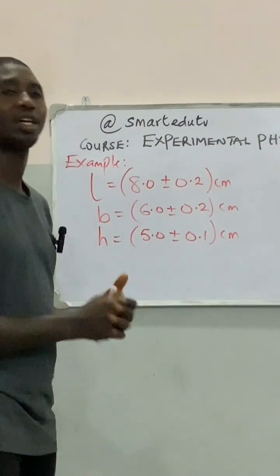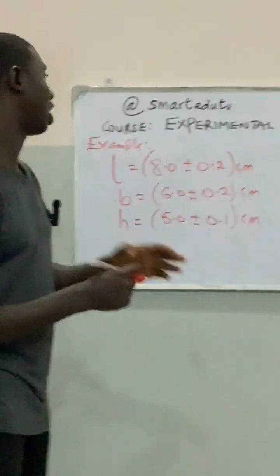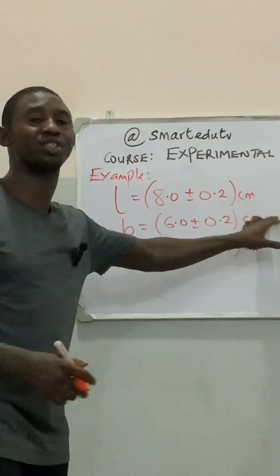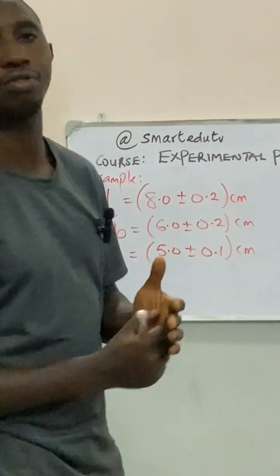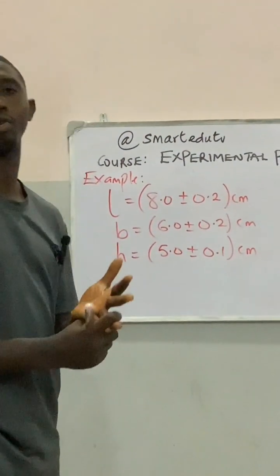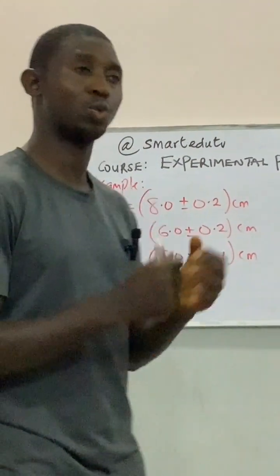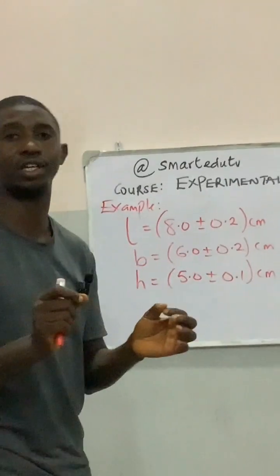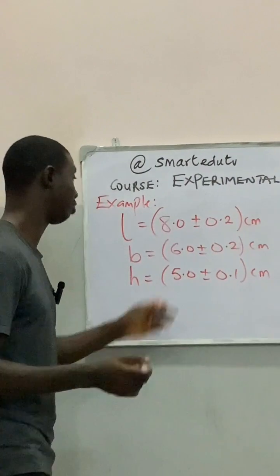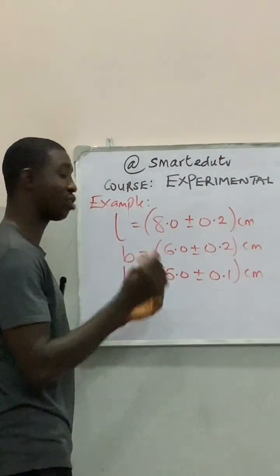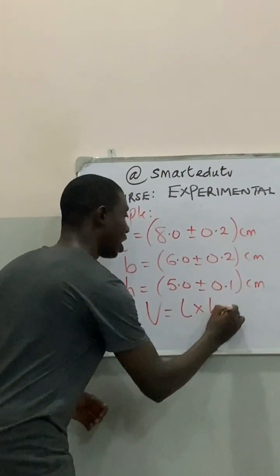The question asks me to calculate the error associated with the volume of the rectangular box, but they didn't specify which type. That means I can calculate it in terms of the maximum error, I can calculate it in terms of the standard error, and I can also calculate it in terms of the percentage error. Since the question is not specific, I am required to calculate the error associated with the volume.